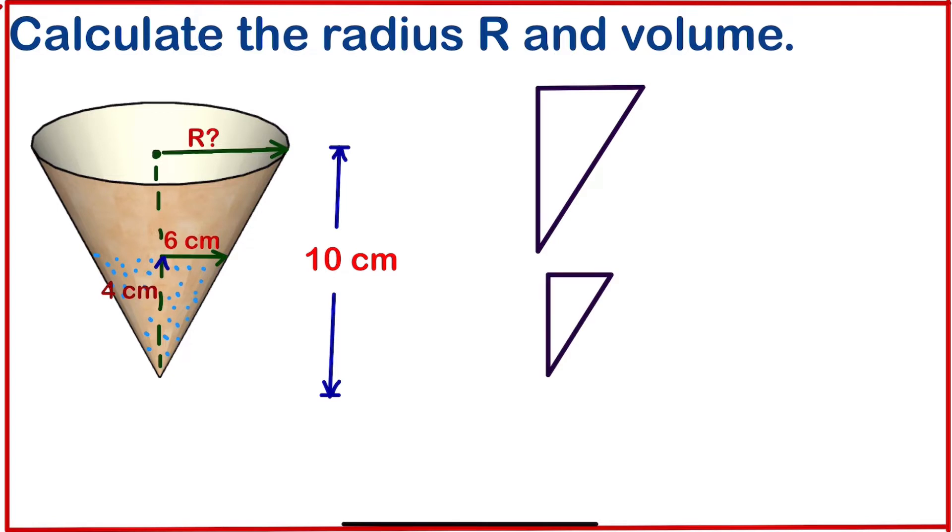Looking at the large, the big triangle, we are going to have its height is going to be 10. You can see the height of this cone is 10, so the height of this triangle will be 10. The radius is unknown.